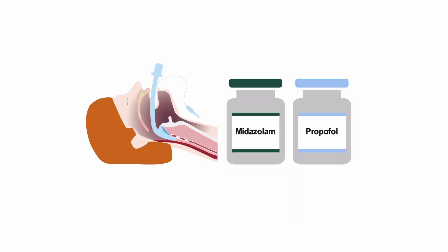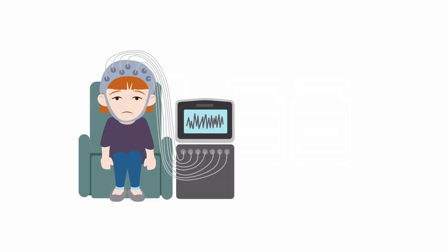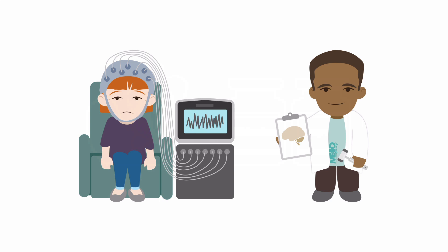Most persistent seizures will respond to general anesthesia. If you are treating status epilepticus with general anesthesia, you'll need to order a continuous EEG and should consult neurology for support. On the other hand, patients that have responded to level 1 or level 2 medications should undergo a standard EEG as soon as possible.